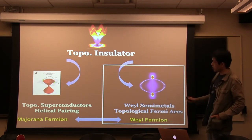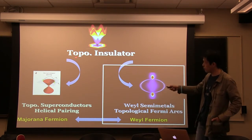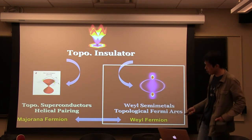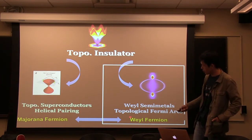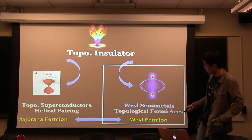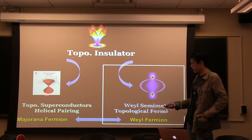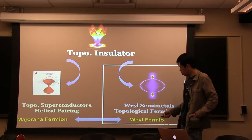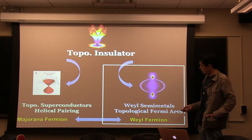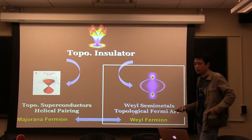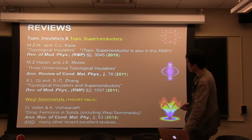Two of the truly exciting new frontiers that emerge from topological insulators are to search for Majorana fermions and to search for Weyl fermions. The first is linked to finding a topological superconductor, and the second is linked to finding a topological Weyl semimetal. Today I'm going to focus on the second part about the Weyl semimetal.